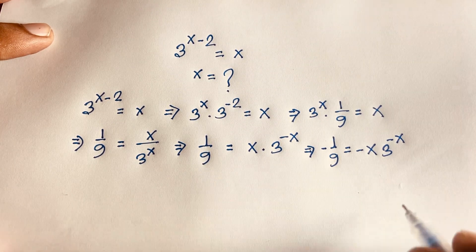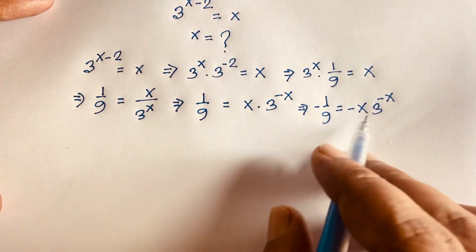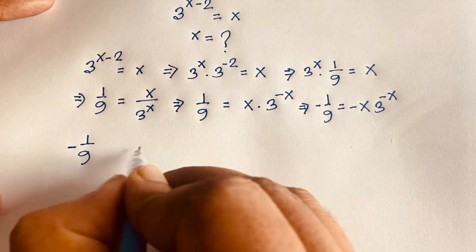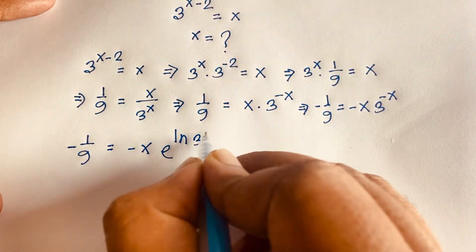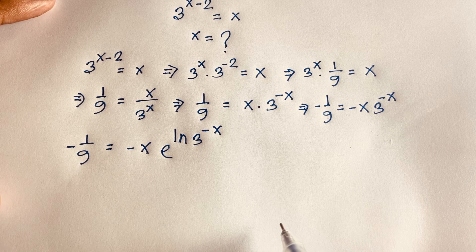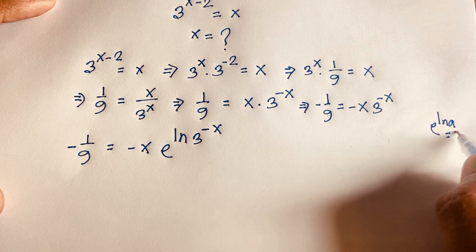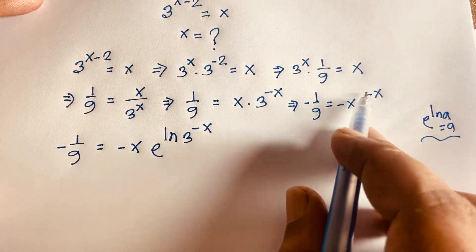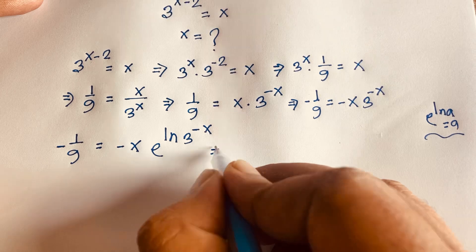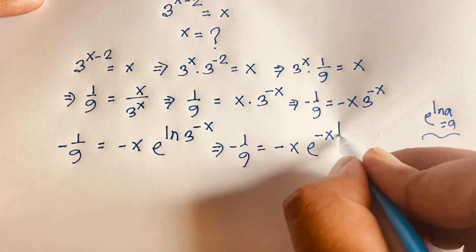I want to use the Lambert W function here. I rewrite 3 to the power minus x using the identity e to the power ln a equals a, so 3 to the power minus x becomes e to the power ln 3 to the power minus x. This gives minus 1 over 9 is equal to minus x times e to the power minus x ln 3.